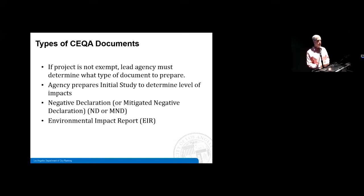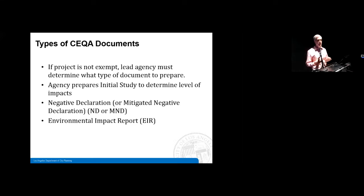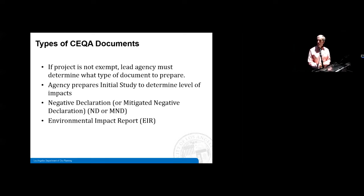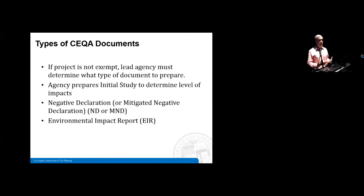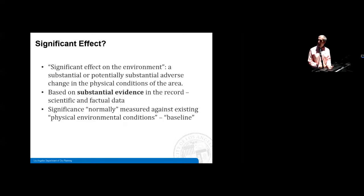Based on the initial study, the lead agency can determine whether to prepare a Negative Declaration (ND) — indicating no environmental impacts — or a Mitigated Negative Declaration (MND), which indicates there could be environmental impacts but mitigation measures in the different impact categories reduce those impacts below a threshold of significance. If the initial study determines impacts cannot be mitigated below a level of significance, the responsibility is to prepare the fullest environmental analysis under CEQA — an Environmental Impact Report or EIR.